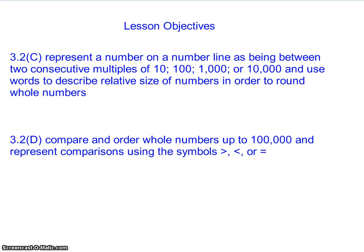Today's lesson objectives are TEKS 3.2C and 3.2D. 3.2C states that we will represent a number on a number line as being between two consecutive multiples of 10, 100, 1,000, or 10,000, and use words to describe relative size of numbers in order to round whole numbers. 3.2D states that we will compare and order whole numbers up to 100,000 and represent comparisons using the symbols greater than, less than, or equal to.